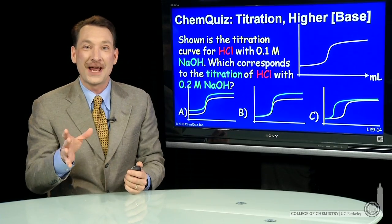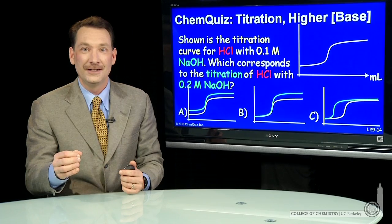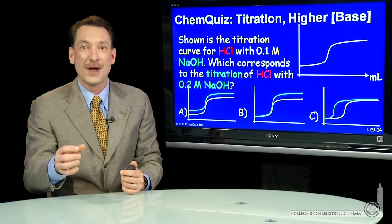Let's look at the titration of a strong acid with a strong base. Our strong acid, HCl, and our strong base, NaOH.